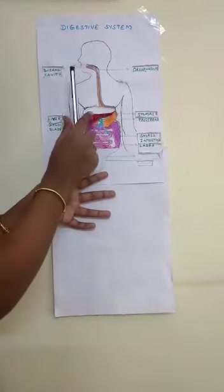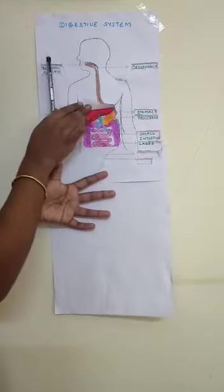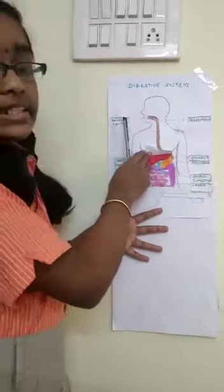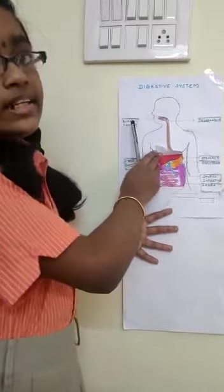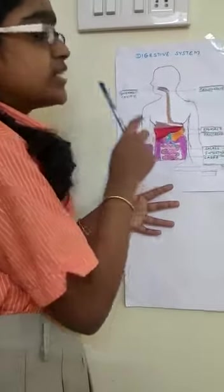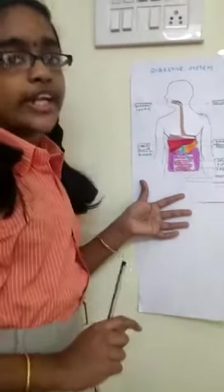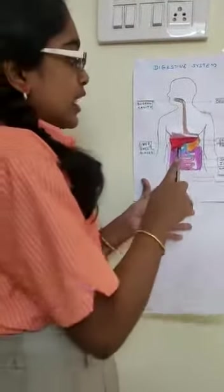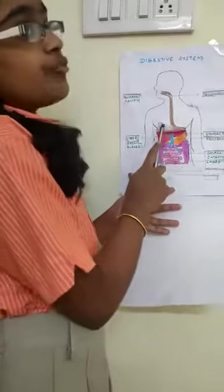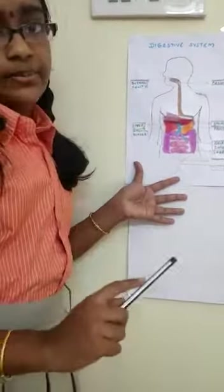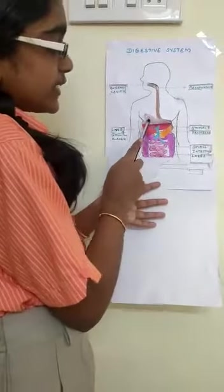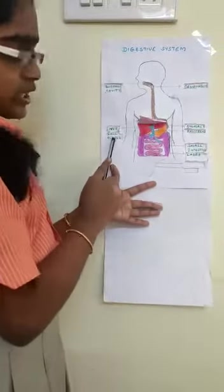The liver is a reddish-brown colored gland and is the largest gland in our body. The liver secretes a juice known as bile juice. The bile juice is important for the digestion of fat. Bile juice is stored in a sac called the gallbladder.